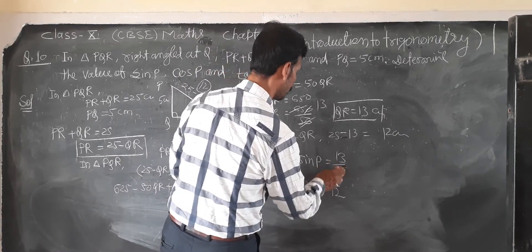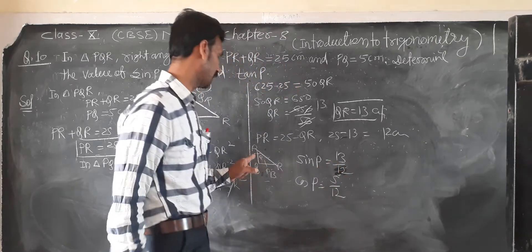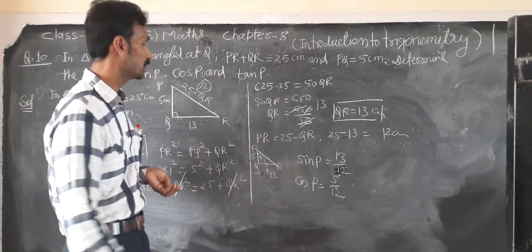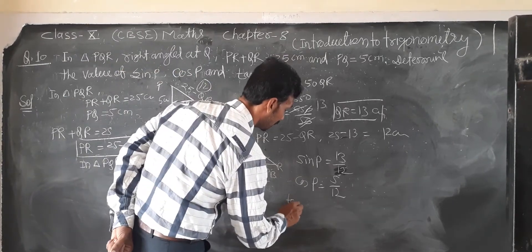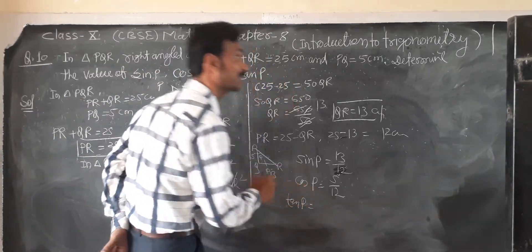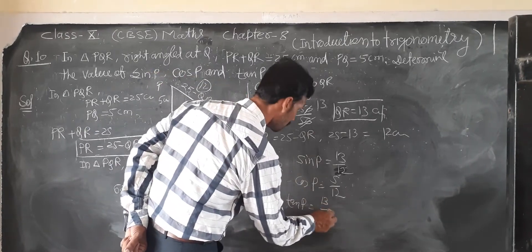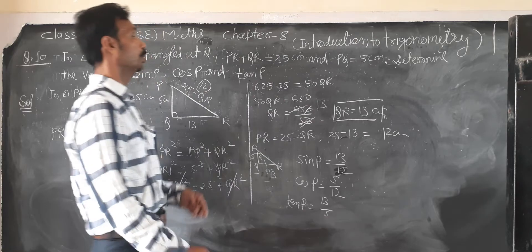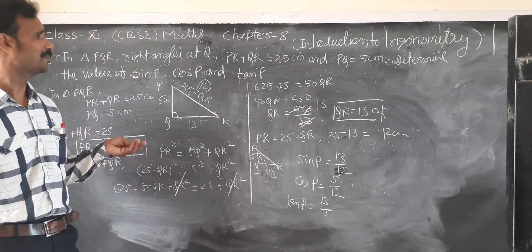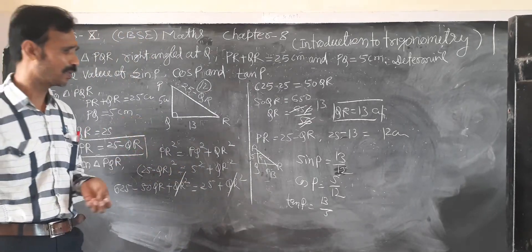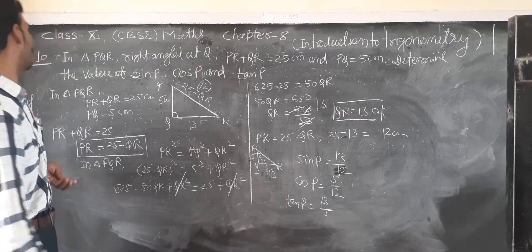Then 5 upon 12, so this is tangent, tan theta equal to perpendicular upon base. So this is the perpendicular and base, so this is 13 upon 5. So easy, then you can find easy value of sin P, cos P, and tan P.